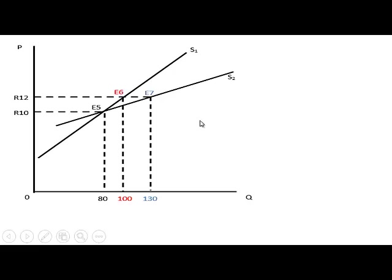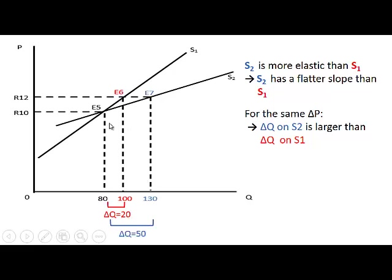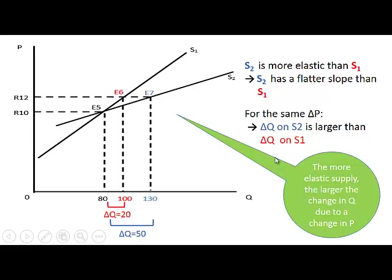Here we have two supply curves, and we are going to compare the more elastic supply curve to the less elastic supply curve. S2 is more elastic — it has a flatter curve than S1. For the same change in price, the change in quantity on S2 is larger than on S1. On S1, the quantity changes from 80 to 100, so only by 20. While on S2, it changes from 80 to 130, so by 50. The more elastic the supply, the larger the change in quantity due to a specific change in price.